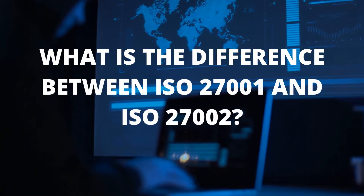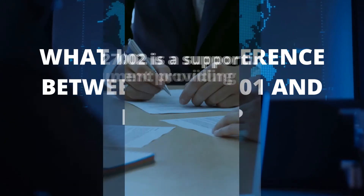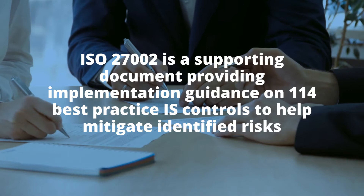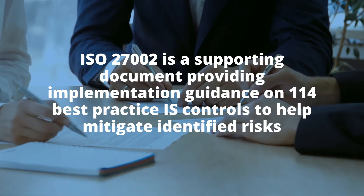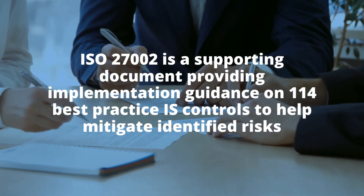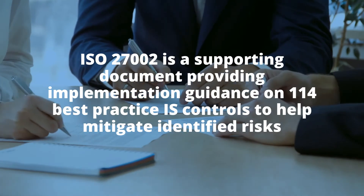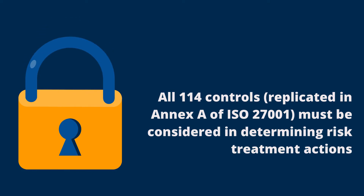What is the difference between ISO 27001 and ISO 27002? ISO 27002 is a supporting document that provides guidance on 114 best practice information security controls that can be implemented to help mitigate the risks identified by your ISO 27001 risk assessment. These 114 controls are replicated in Annex A of ISO 27001 and you are required to consider all of them when determining the most appropriate actions to mitigate your risks.